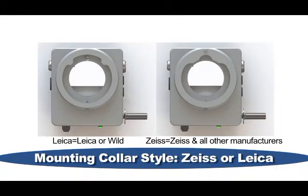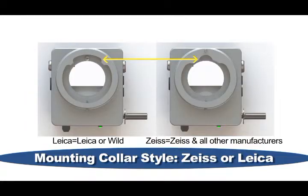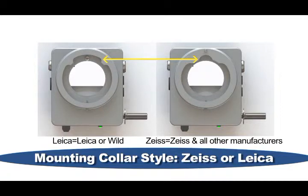First, determine the style of mounting collar your microscope has. If your microscope is made by Leica or Wild, then it will use the Leica-style Rolls-Infinity. Zeiss and all other manufacturers follow the Zeiss-style mounting collar design. The mounting collar style of each Rolls-Infinity reinverter is very easily identified: models using the Zeiss standard are engraved with a Z, and models using the Leica standard are engraved with an L. Please note that Zeiss and Leica mounting collars are not interchangeable. You must confirm which mounting collar style your microscope has to successfully install the Rolls-Infinity reinverter.